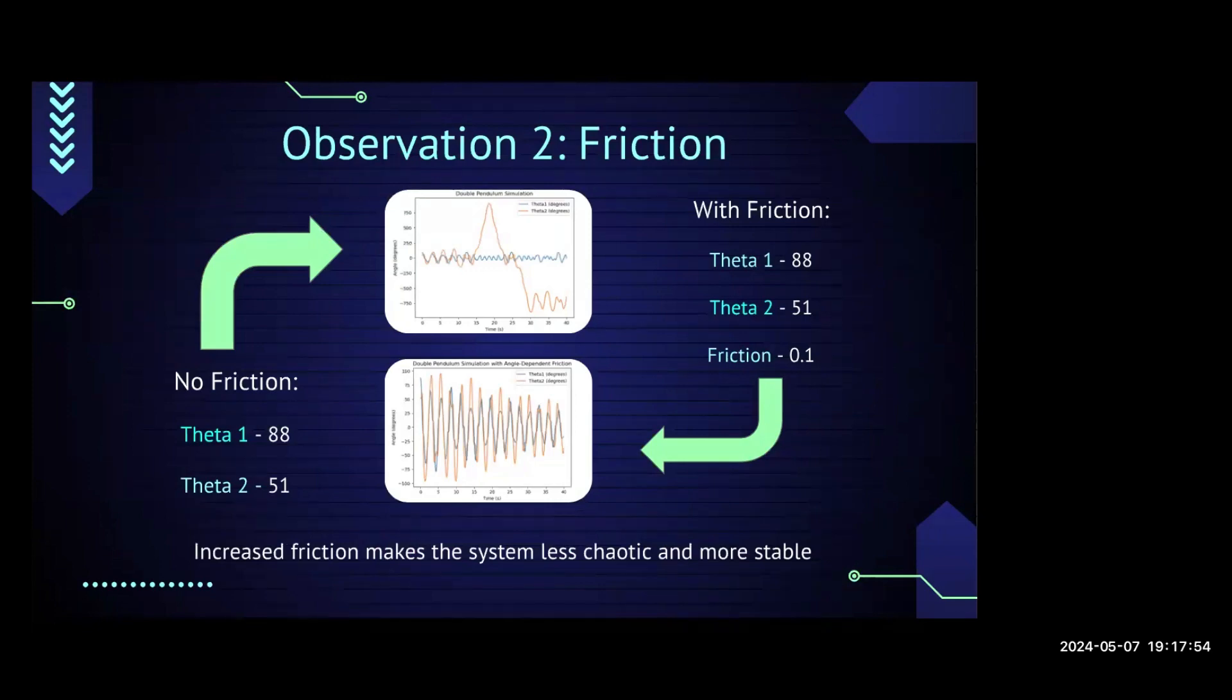For this one, we were able to implement friction into our graphs to make it more realistic. Instead of a constant friction, friction is actually a function of the angle, so the friction changes at each rotation. For our initial conditions, we put theta 1 as 88 and theta 2 as 51. The top image has no friction, and you can see how wildly chaotic it is, especially with theta 2. Because theta 1 is so much bigger and such a large value, it makes it extremely chaotic, going all the way down to negative 750. With friction, it's still the same initial conditions. However, the friction is only a small bit at 0.1. While it is still chaotic, it looks way more predictable and manageable than the top image. Both angles kind of repeat over each other. Based on that, with increased friction, it makes the system way less chaotic and more stable. We found that even when the friction was 0.01, it still made it extremely stable.